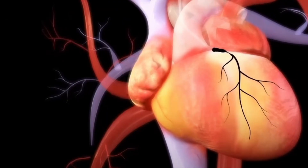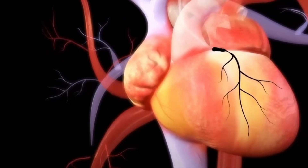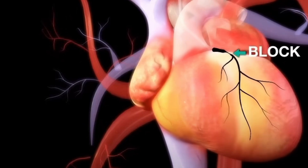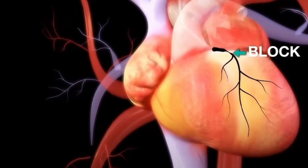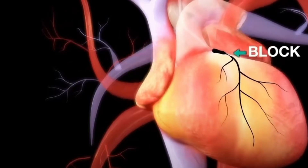A special dye is injected which allows the fluoroscope to take x-ray images of the arterial interiors and helps identify the position of the blockage. This is called an angiogram. Once the blockage is identified, a flexible guide wire is inserted into the artery vessel.